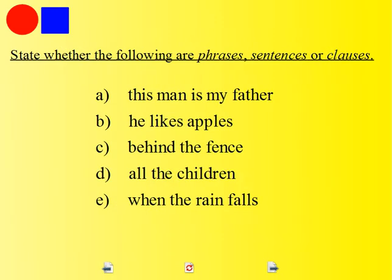Here we have some groups of words and what we want to do is state whether they are phrases, sentences, or clauses. So have a go at this exercise. Look at these groups of words and state clearly whether they are phrases — which means a group of words that do not have a verb and do not make sense by themselves — sentences, which means a group of words which stand by themselves and have a complete meaning, or clauses, which are groups of words which do not have a complete meaning but do contain a verb.